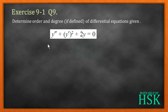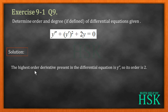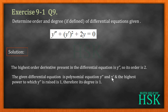In question number 9 we have been given y'' + (y')² + 2y = 0. The highest order derivative present is y'', that is the second order derivative of y with respect to x, so its order is 2. The given differential equation is a polynomial equation in y'' and y, and the highest power to which y'' is raised is 1, therefore its degree is 1.